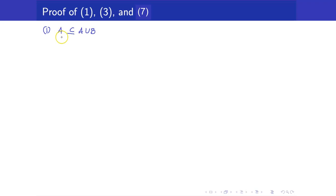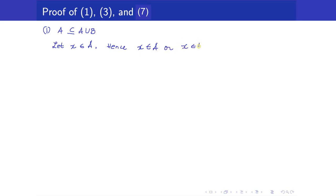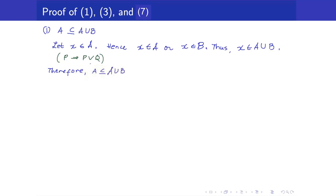Let us prove some of these. First, let us prove that A is a subset of A union B. To prove one set is a subset of another, we get an arbitrary element X of A and show it is an element of A union B. Since X is in A, we have that X is in A or X is in B — using the logical tautology that P implies P or Q. Thus X is an element of A union B. Therefore, A is a subset of A union B.